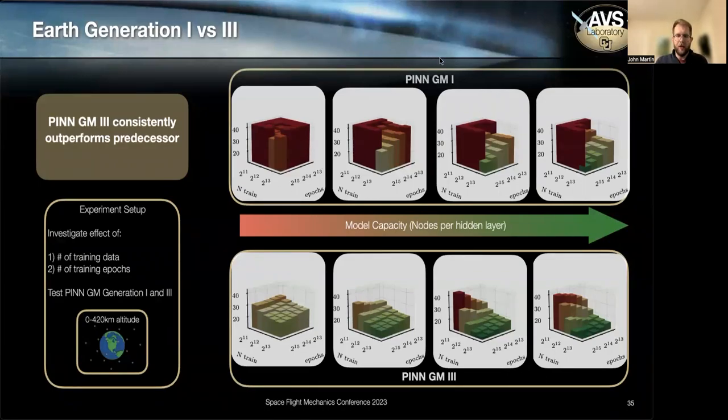And what you see is for the first generation PINN gravity model, the low capacity networks almost never learn anything useful. Once you start getting into these more powerful networks, there are some cases where it begins to learn some interesting features. But performance is somewhat inconsistent, like we were talking about before.